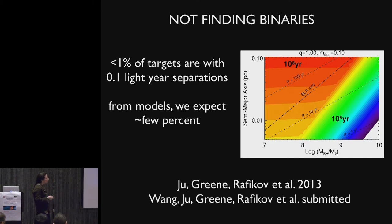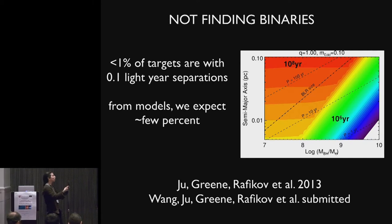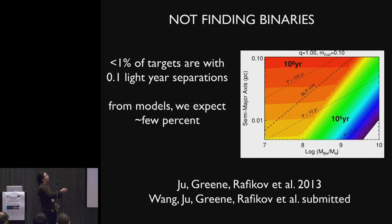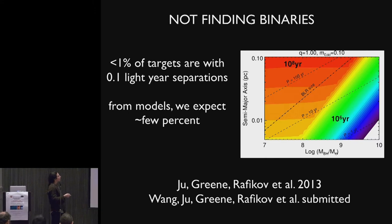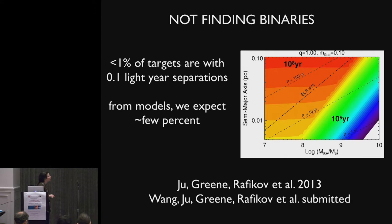So if the black holes are being brought together by dissipation and accretion disk, we expect that they will live in our observable window for about ten to the six years. So if we take that time then we expect a few percent of our objects should be passing through this phase.